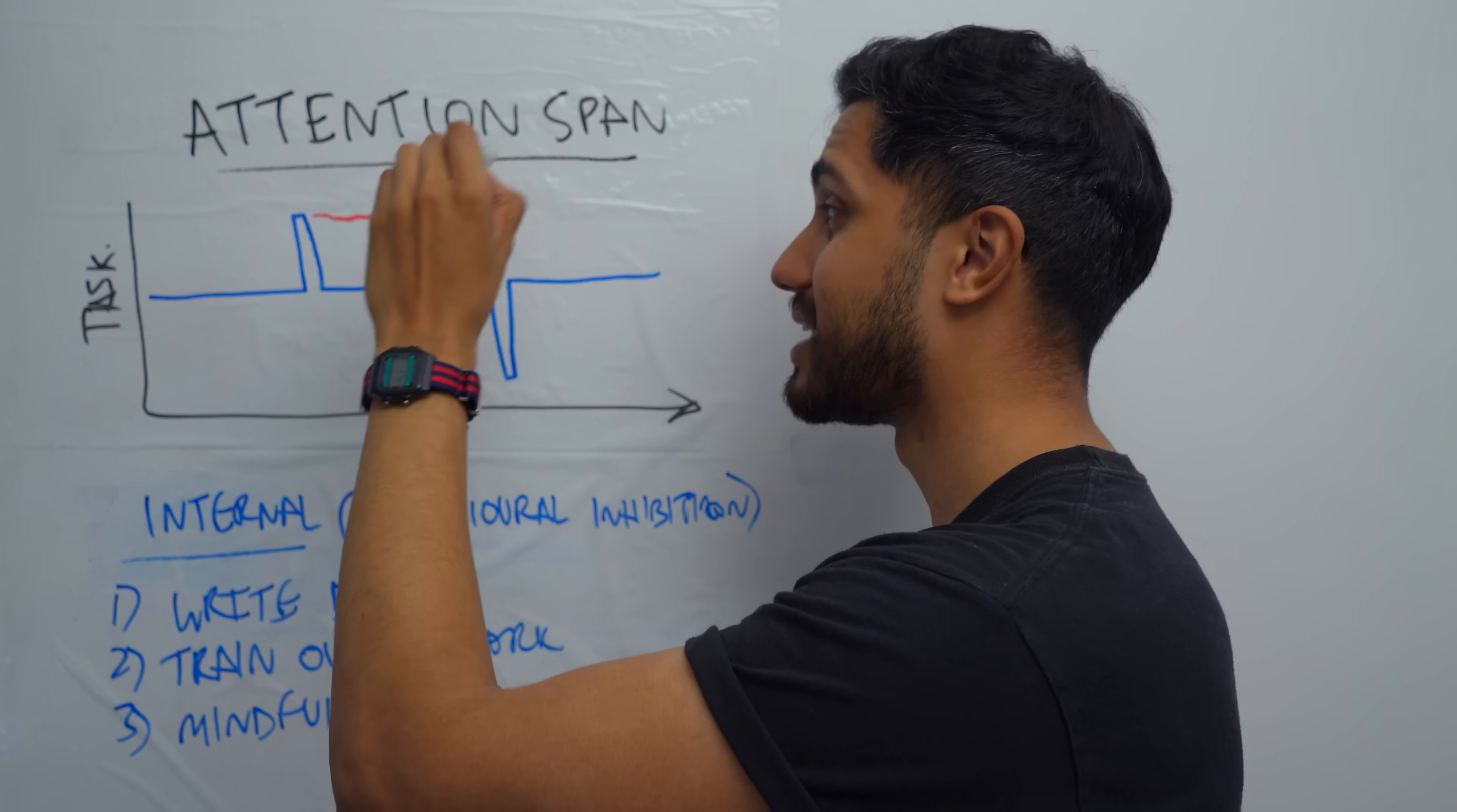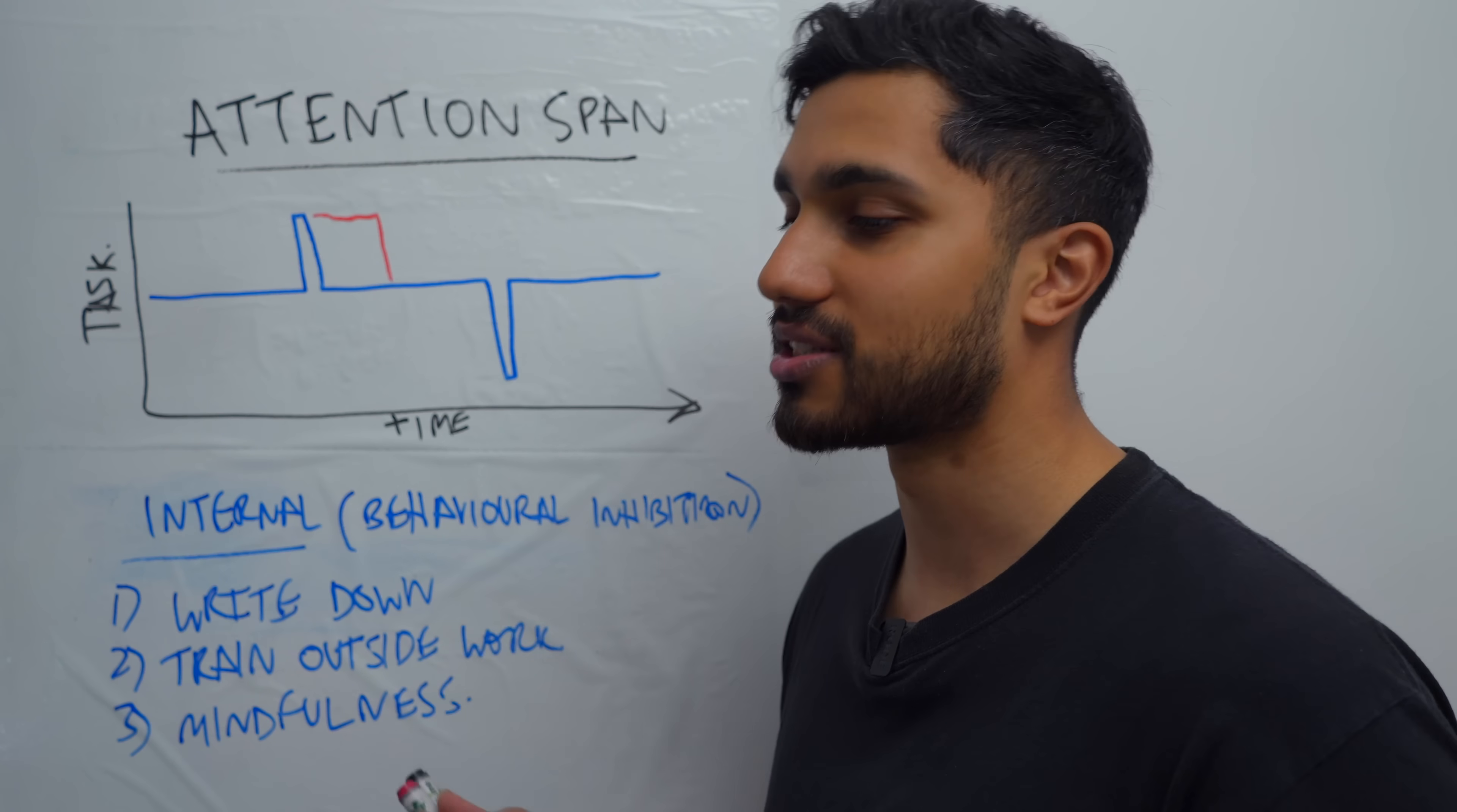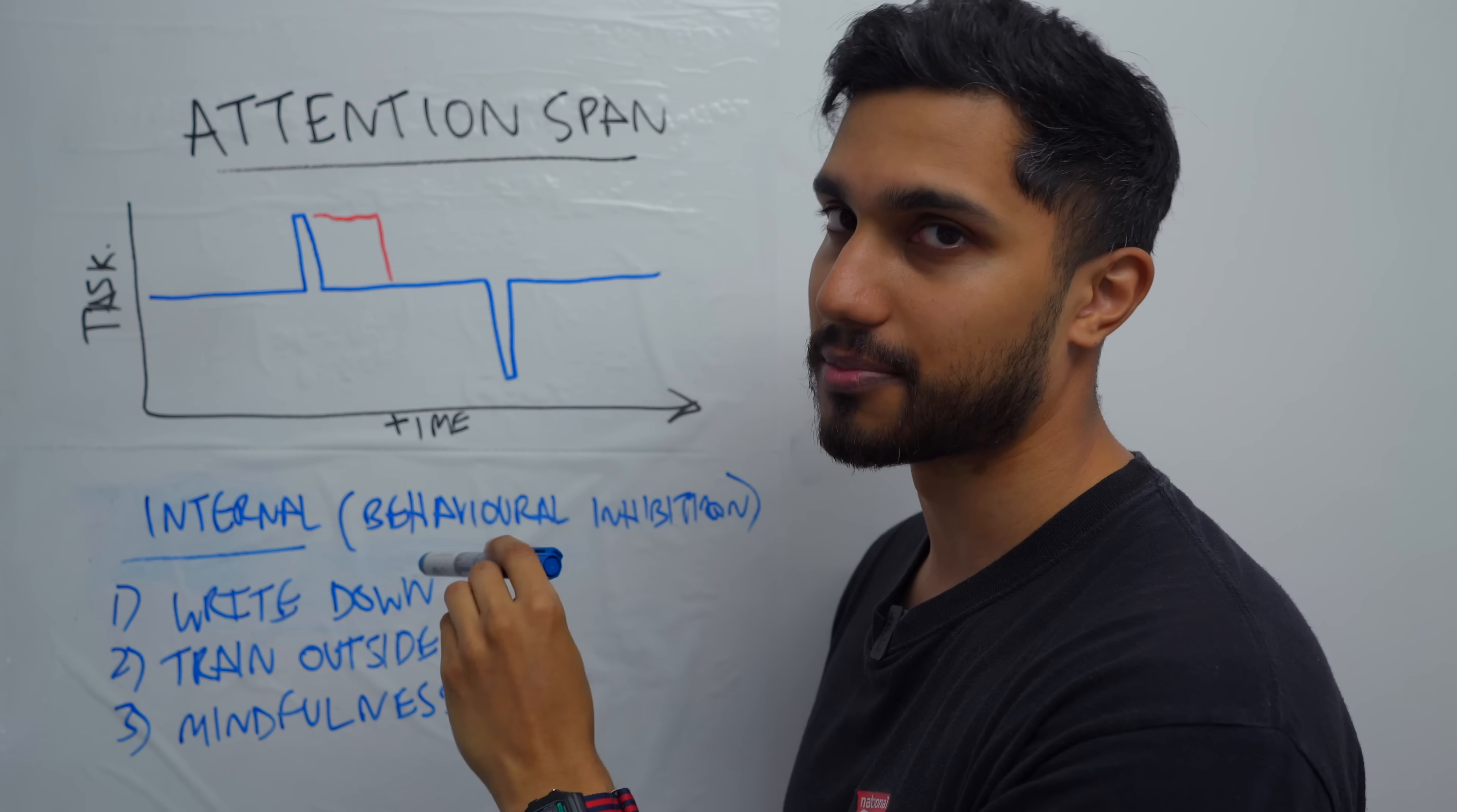So now you understand what an attention span is and how to optimize it to make progress and achieve your goals. But if you feel like sometimes you haven't got the motivation to sit down and do the work, then click this video on screen where I explain my formula for motivating yourself without discipline.